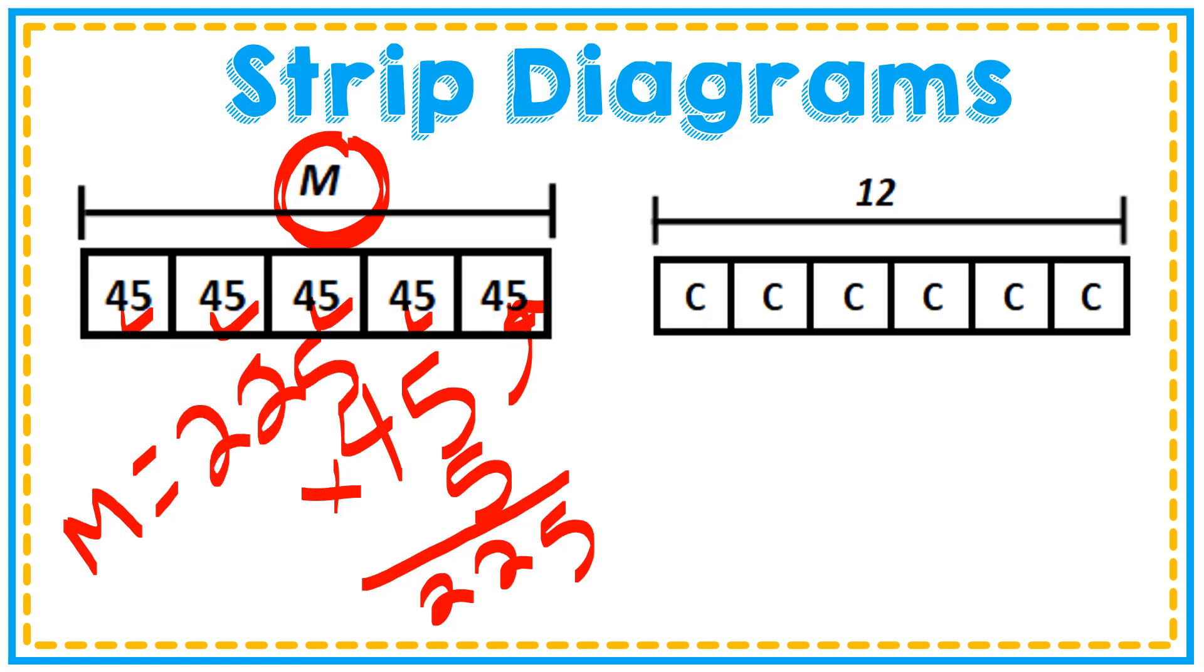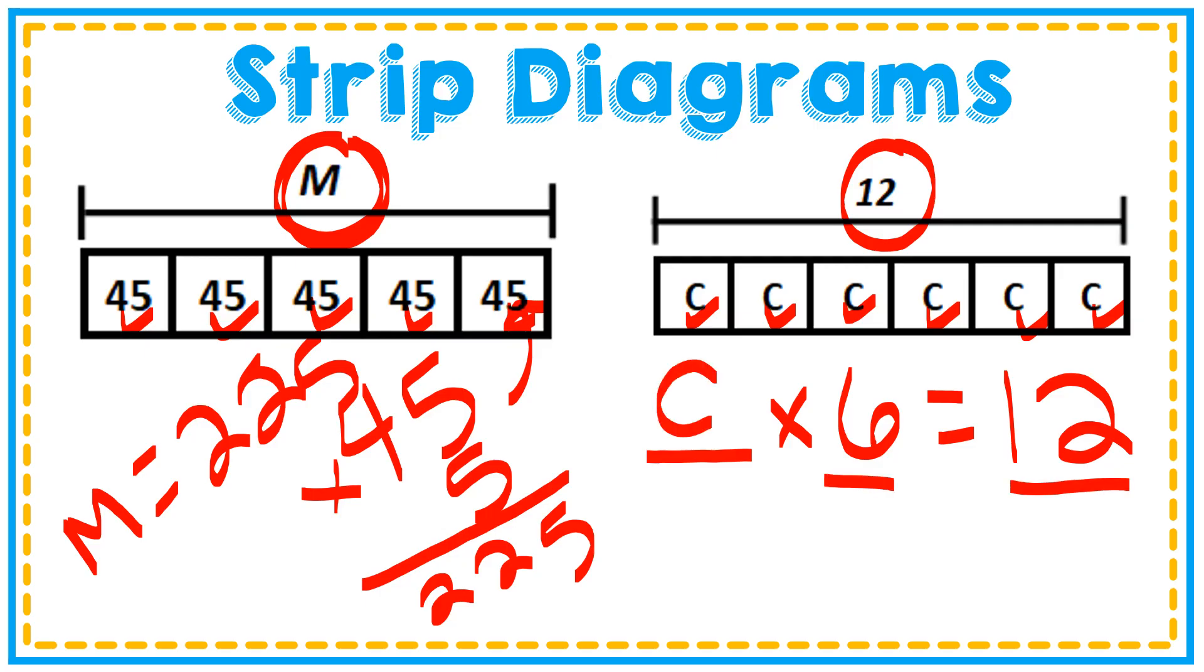Let's look at the next one. In this case, this one's different. I have variables inside of my parts. I have six parts. So I know that each variable C is going to have the same value. So something times six is going to give me a whole of 12. What could I multiply by six to get 12? Well, you know your facts. What times six equals 12? C equals two, because two times six equals 12.